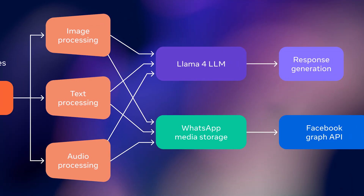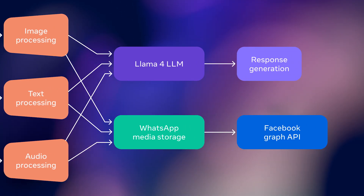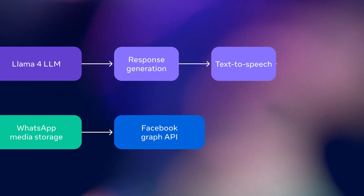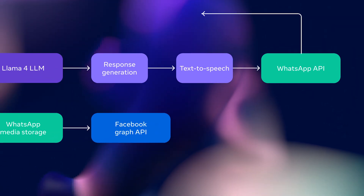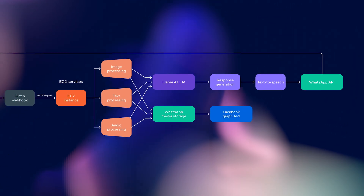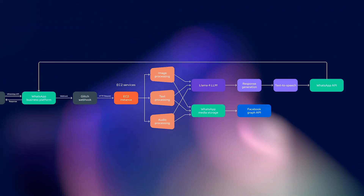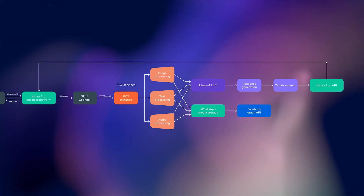For audio, we utilize high-speed speech-to-text and text-to-speech APIs, while WhatsApp Media Storage leverages WhatsApp's native storage and the Facebook Graph API for seamless content handling. Keep in mind, you are free to choose alternative APIs or cloud services to access models or handle media processing. These are simply the options we have selected for this example.